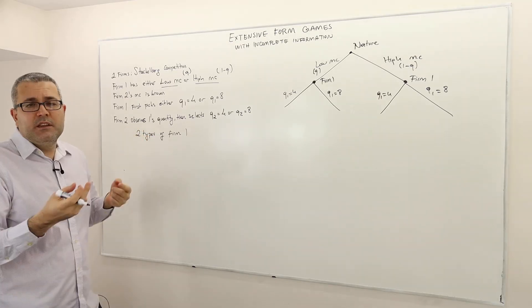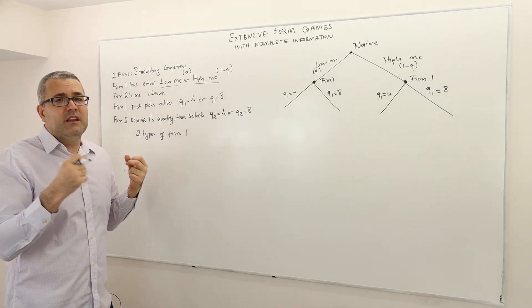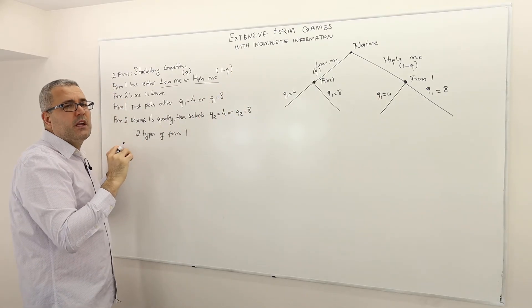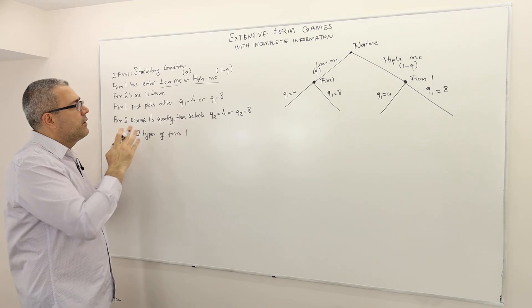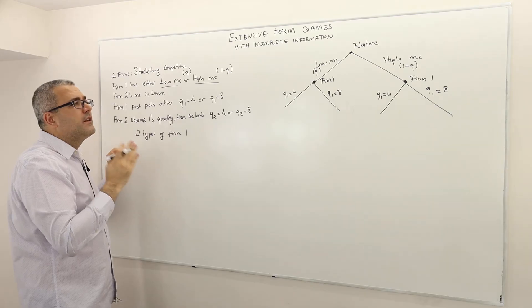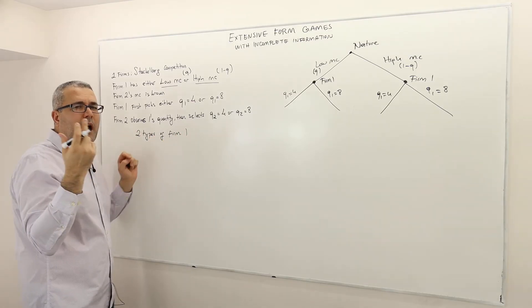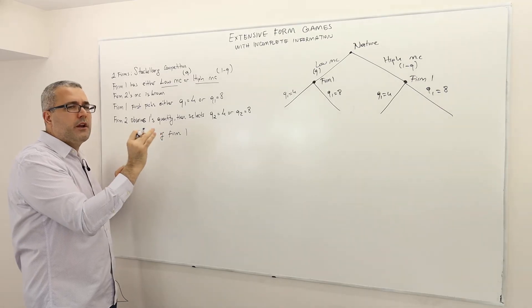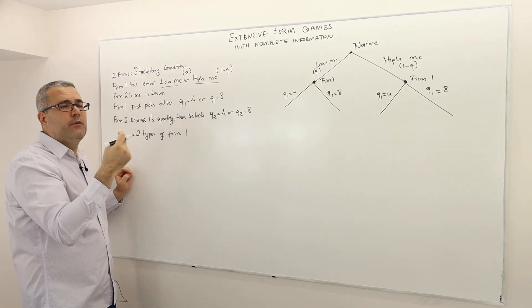Well then next firm 2 observes firm 1's quantity but only quantity. So here's the main kind of new thing in these games. This is an incomplete information game. So some information is known to only one player but unknown to other players. So here this information is the marginal cost of firm 1. Is it high or low? This is only known by firm 1.